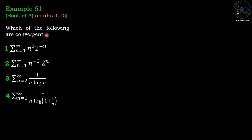Which of the following are convergent? First option: sigma n equal to 1 to infinity n squared times 2 power minus n. Second option: sigma n equal to 1 to infinity n power minus 2 times 2 power n. Third option: sigma n equal to 2 to infinity 1 upon n log n. And the fourth option: sigma n equal to 1 to infinity 1 upon n times log(1 plus 1 by n).